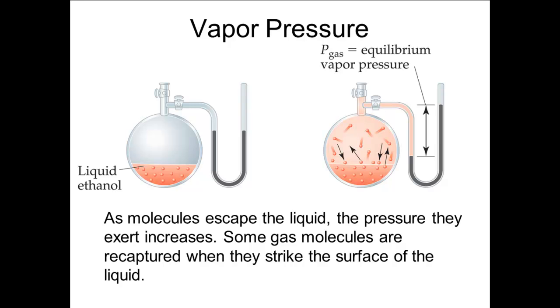Let's look a little more closely at the process of equilibrium. When a volatile liquid, one with a significant vapor pressure like ethanol, is placed in a closed container, molecules begin to escape from the liquid and become gas molecules. Some of these gas molecules lose energy and can be recaptured by the liquid if they strike its surface. Initially, we have more molecules escaping than being captured, so the pressure rises.